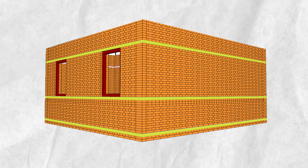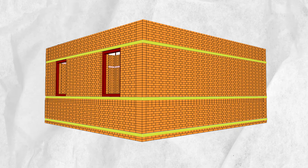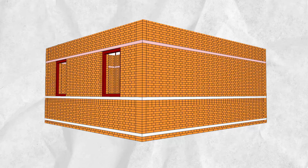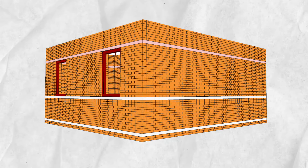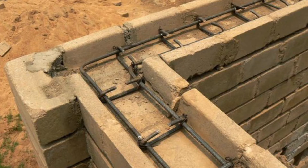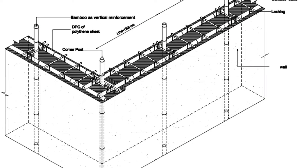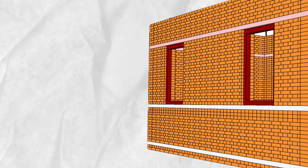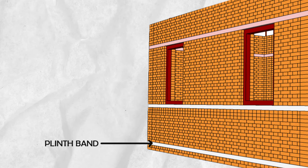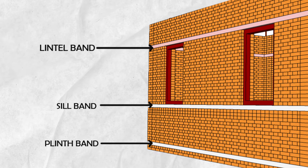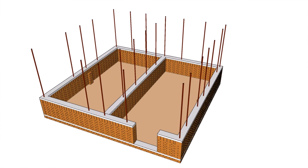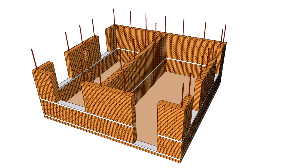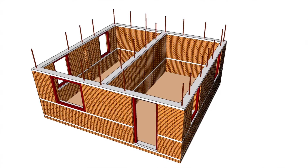Horizontal bands are provided to create a box effect and to impart horizontal bending strength. Reinforced concrete band is the best material for horizontal bands; however, bamboo and timber can be used as alternatives. These bands shall be located at least at the plinth, sill, and lintel levels of the building. They shall be made continuous throughout the wall with proper connections and shall be tied properly with the vertical reinforcement at different levels.